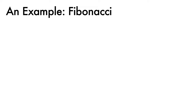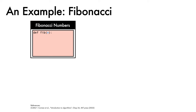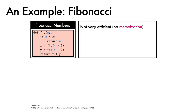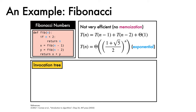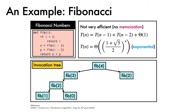Let's see how this framework can be used on an example — a recursive implementation of the Fibonacci sequence value at position n. If n is less than 2, we return n. Otherwise, we assign x to fib(n−1), y to fib(n−2), and return their sum. This is not a very efficient function because we are not using memoization to avoid duplicated work. The runtime is T(n) = T(n−1) + T(n−2) + Θ(1), which solves to Θ((1 + √5)/2)^n — an exponential runtime. Looking at the invocation tree from fib(4), we see massive repeated computation: fib(2) and fib(1) are computed multiple times.